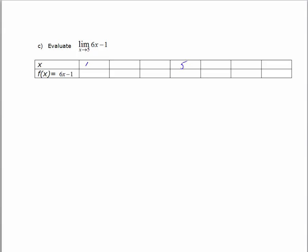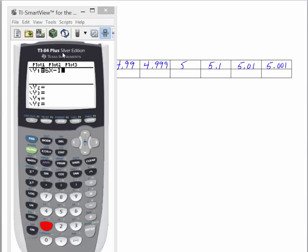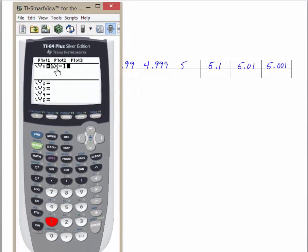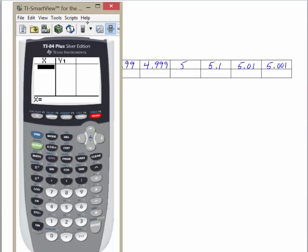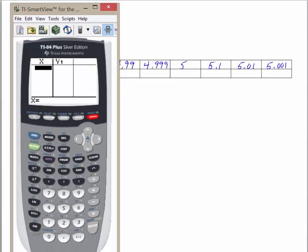The values that I would choose coming from the left are 4.9, 4.99, 4.999. From the right, I'd choose 5.1, 5.01, 5.001. So I've gone ahead and typed in 6x minus 1 in my calculator. I've cleared out my table. I'm going to start plugging in my function values, my x values. So 4.9, 4.99, 4.999. And I'll go in and add the x values to the right of 5. So 5.1, 5.01, 5.001.